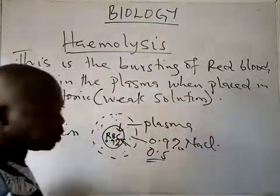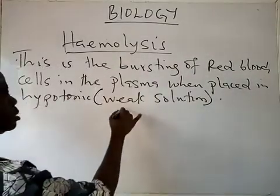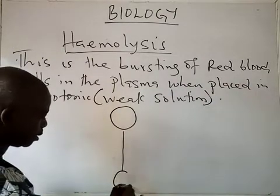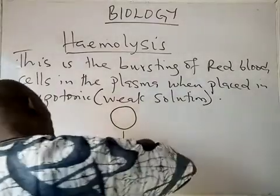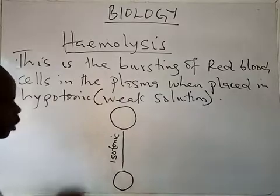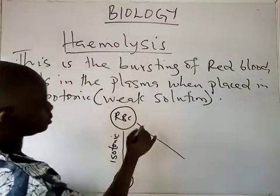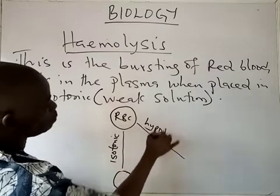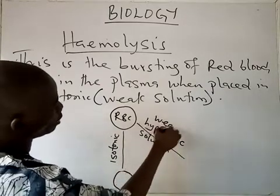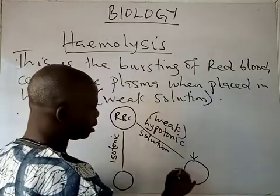For example, if we look at red blood cells — under normal situations, the red blood cell maintains its shape if it is found in an isotonic situation. But when red blood cells are placed in a hypotonic solution or weak solution, what will happen is that the red blood cells will take in water.